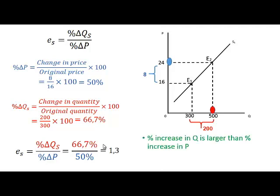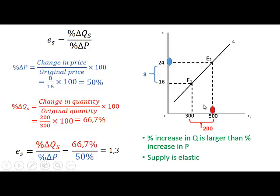The percentage increase in quantity is larger than the percentage increase in price, and that is why the price elasticity of supply is larger than one — supply is elastic. The quantity changes by a larger percentage than the percentage change in price.